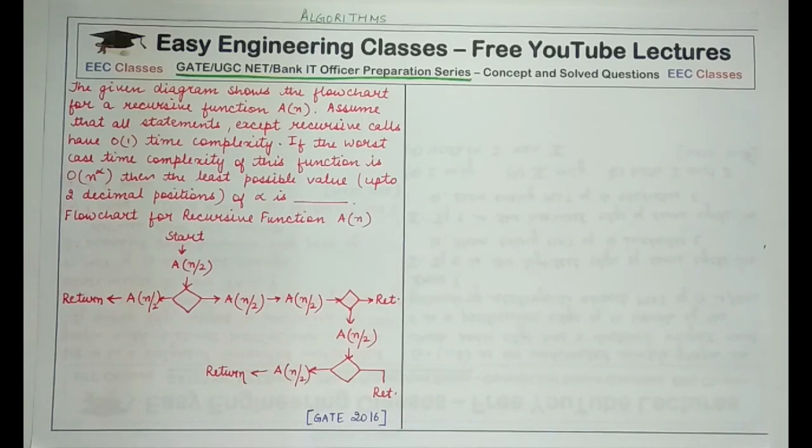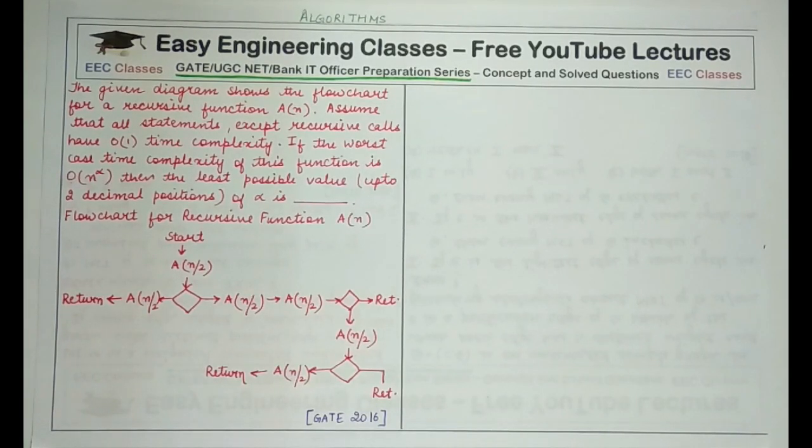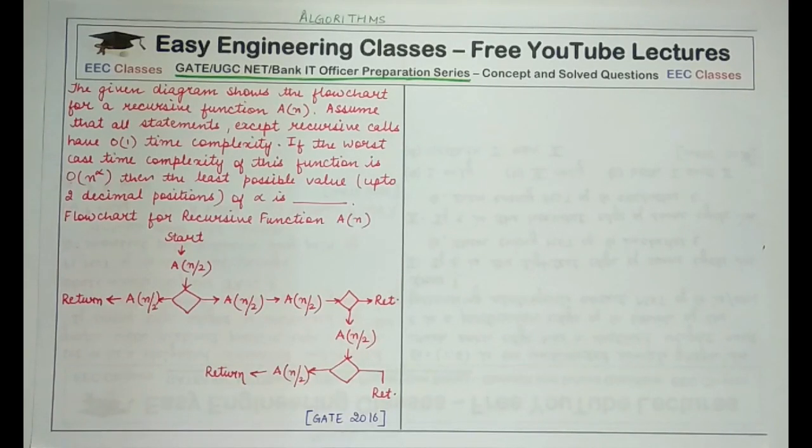It was a part of GATE 2016 and it is quite an interesting question. So let's see what is given and what is asked. The question says, the given diagram shows the flowchart for a recursive function A(n). Assume that all statements except recursive calls have order of one time complexity. If the worst case time complexity of this function is big O of n raised to power alpha, then the least possible value up to two decimal positions of alpha is, and we are then given the flowchart for the recursive function A(n).